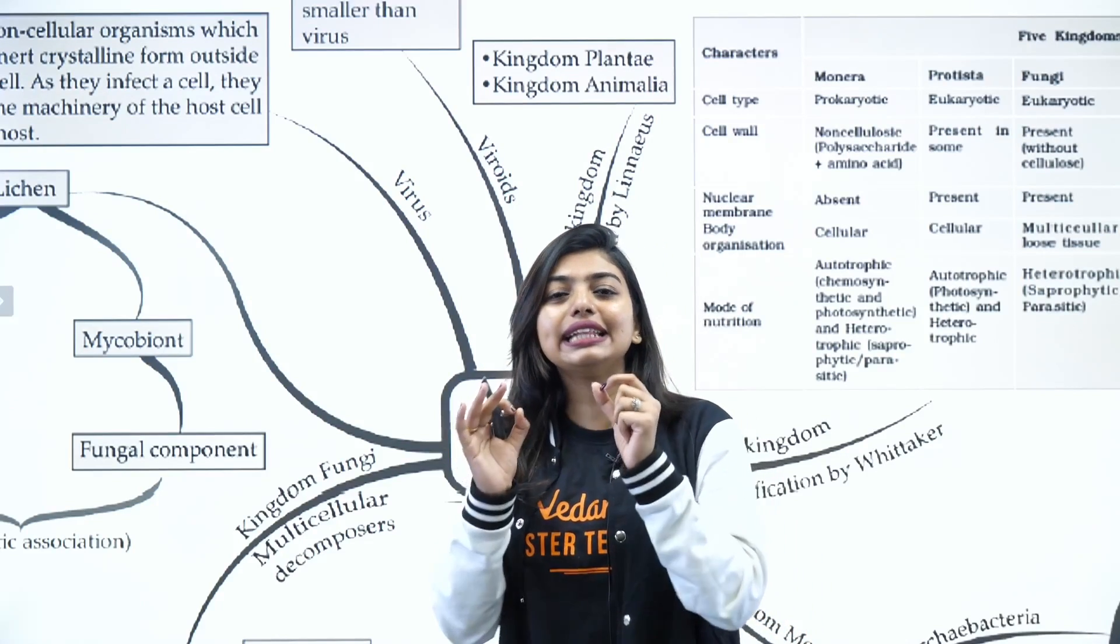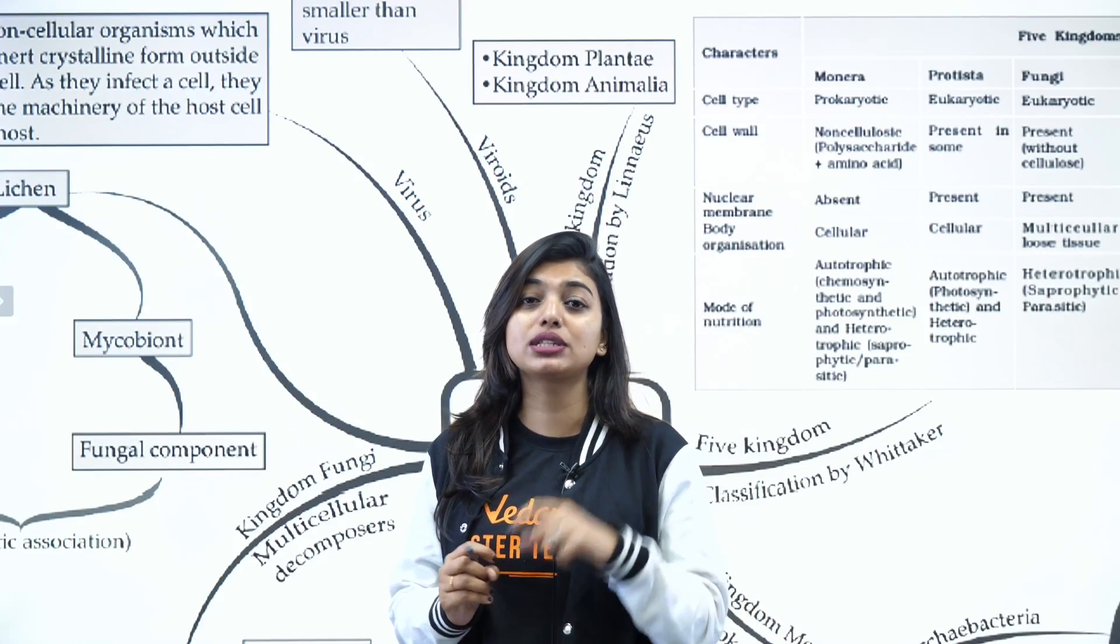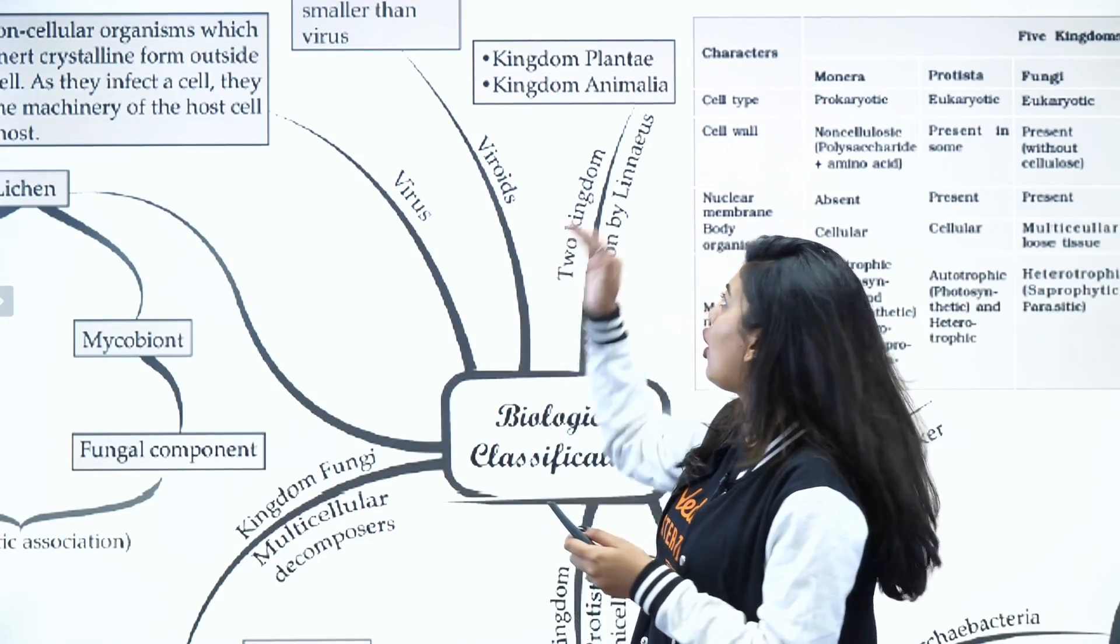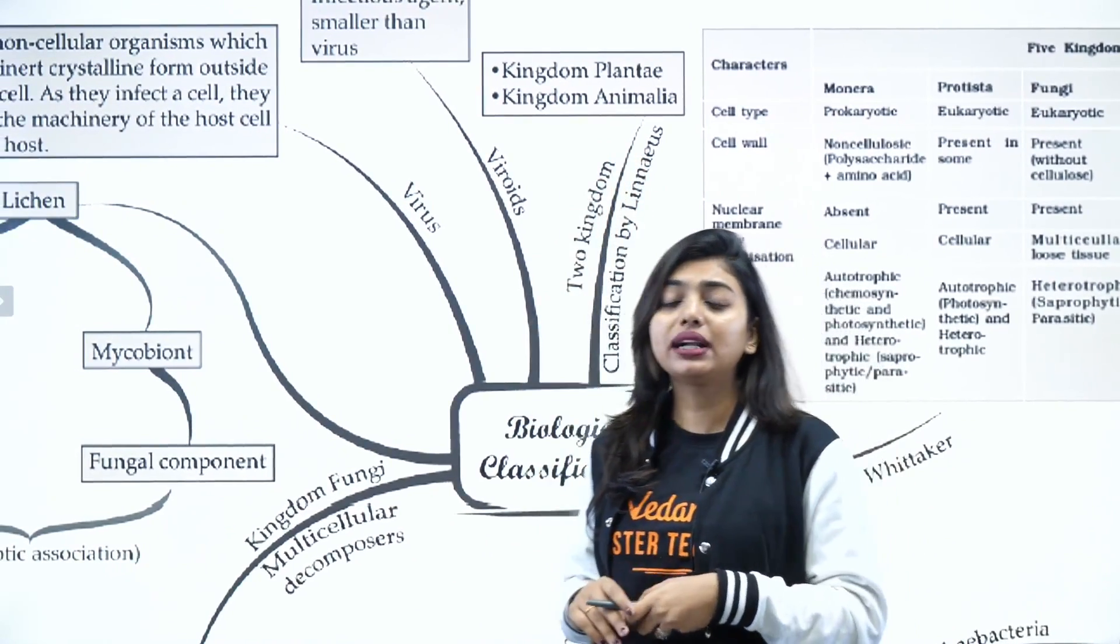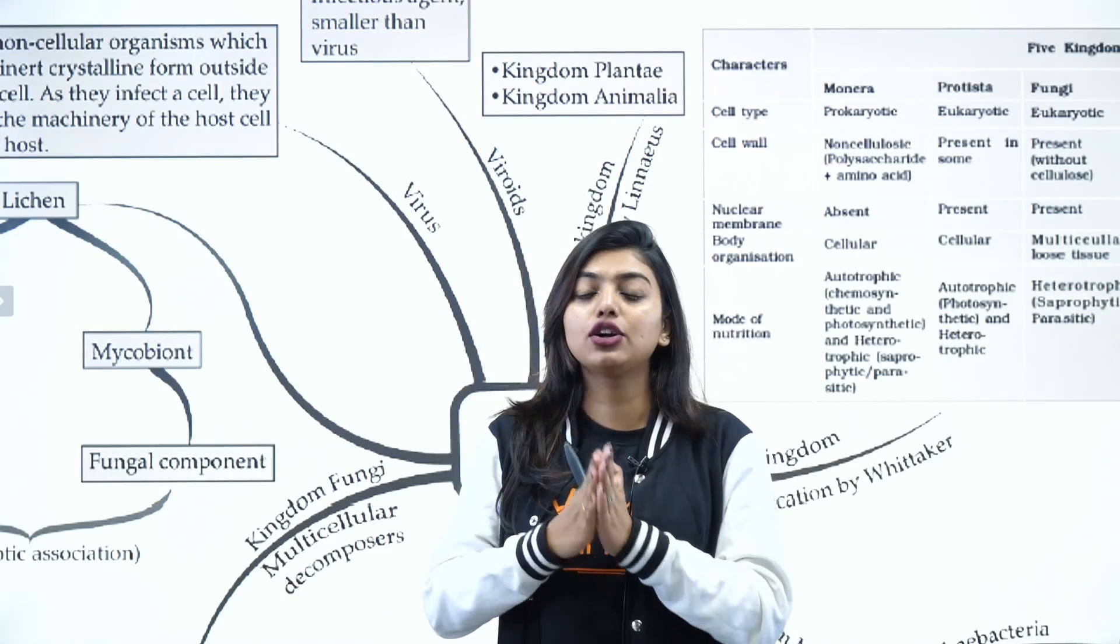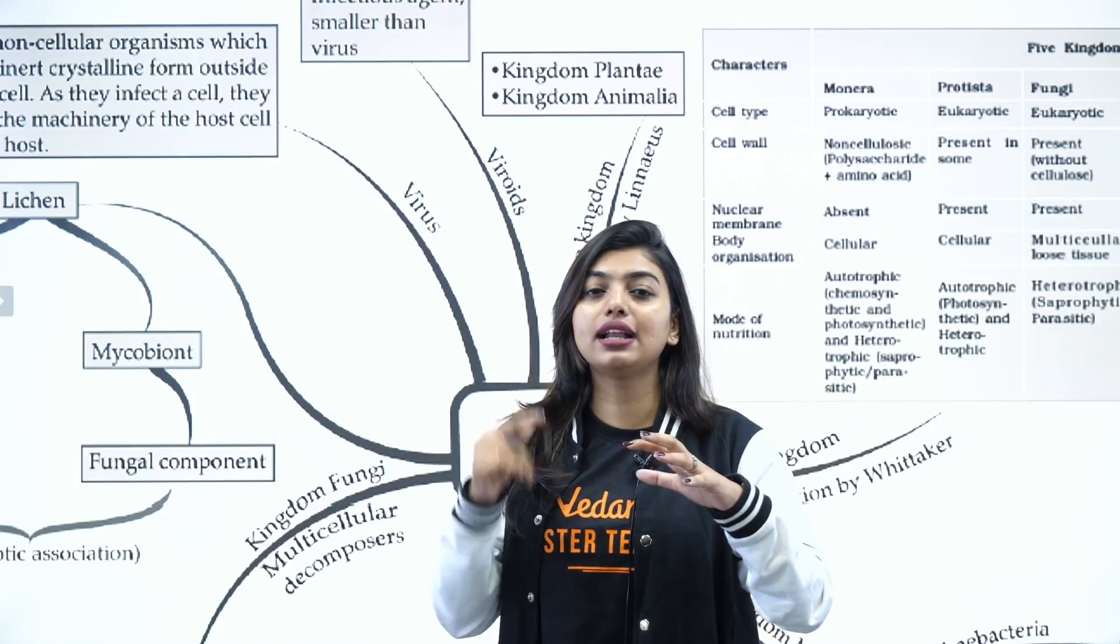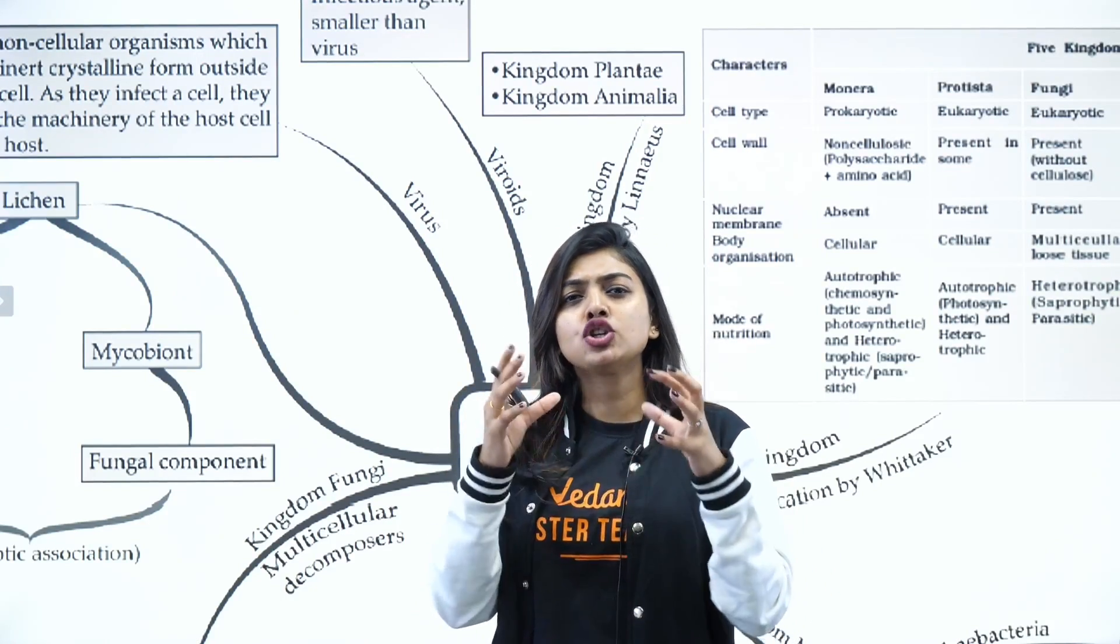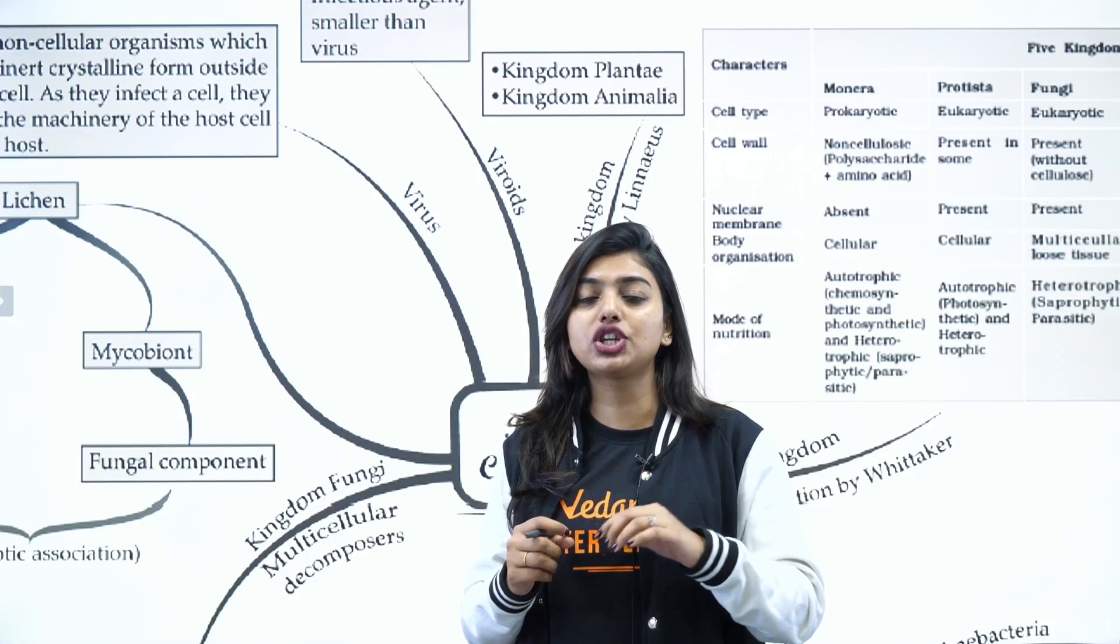Then the next classification that came was by Carl Linnaeus - that is your two kingdom classification. He classified all the plants and animals, but the problem was that he did not differentiate photosynthetic and non-photosynthetic, eukaryotes and prokaryotes, unicellular and multicellular, and he did not even know where to place fungi.